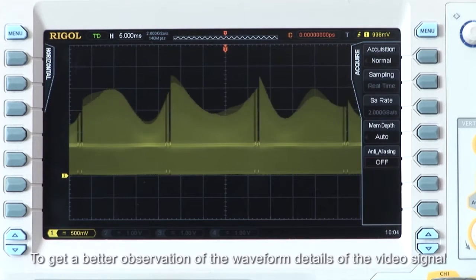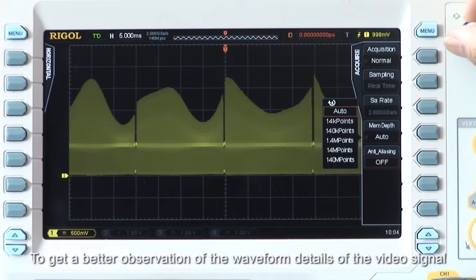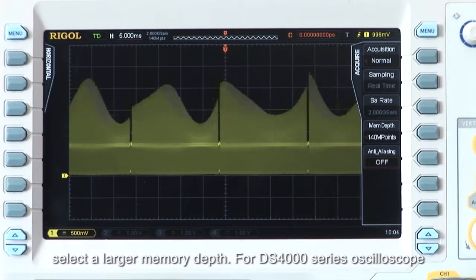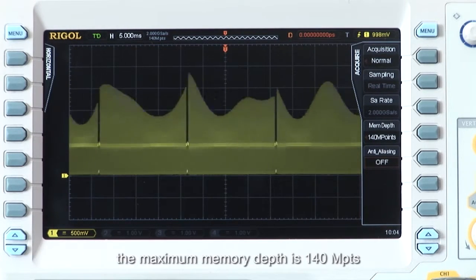To get a better observation of the waveform details of the video signal, select a larger memory depth. For the DS4000 series, the maximum memory depth is 140 mega points.